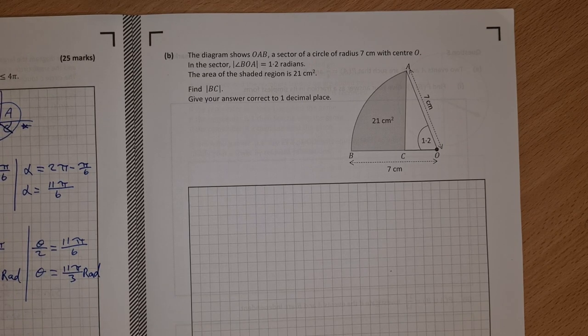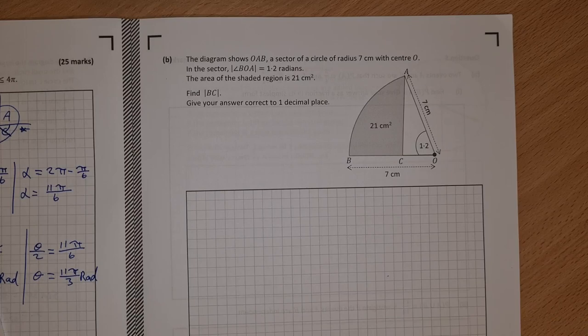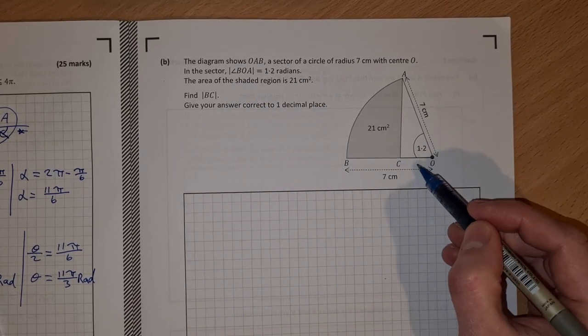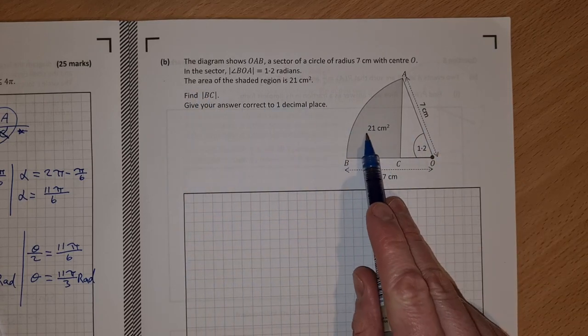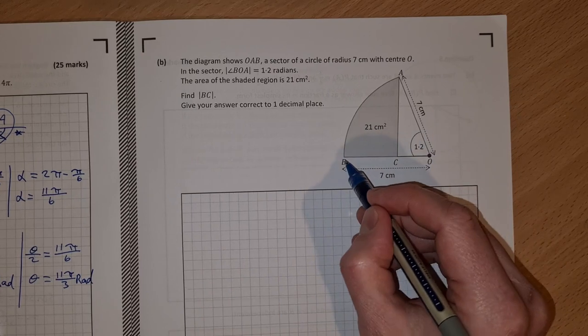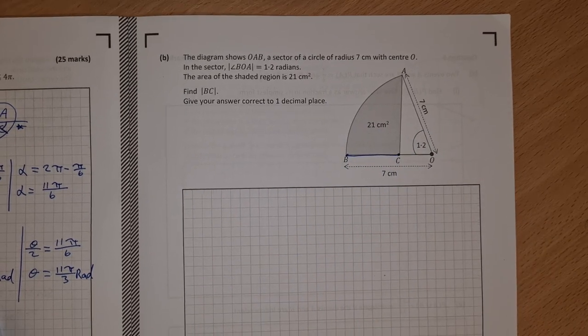Part B says the diagram shows OAB, which is the sector of a circle which has radius 7 with centre O. In the sector, the angle BOA is 1.2 radians. The area of the shaded region is 21 square centimetres. Find BC, this length here, correct to one decimal place.